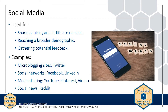Social media should not be ignored as a way to increase awareness of an evaluation. Social media allow you to share your results and their implications quickly, with a broad demographic, and at no cost. Although you cannot share detailed information, you can use social media to refer users to other dissemination approaches that provide much more detail. For example, a tweet can include a link to a blog post or a report about your evaluation. The two-way nature of communication in social media also creates the potential for gathering feedback, though social media feedback should always be supplemented with other methods.